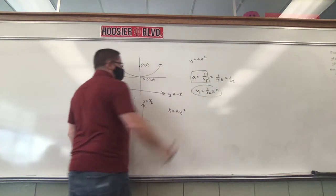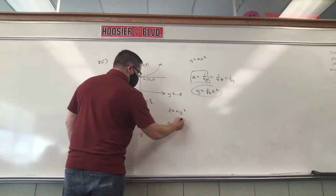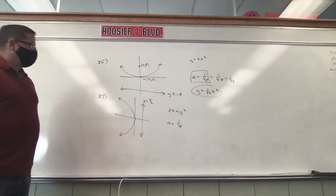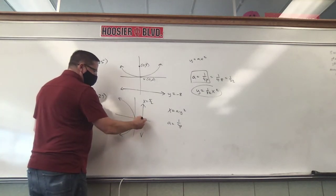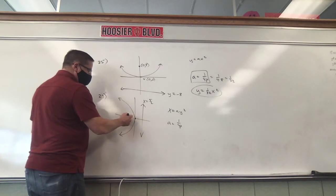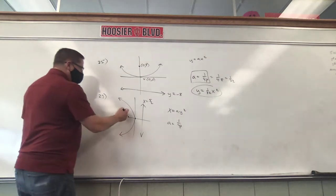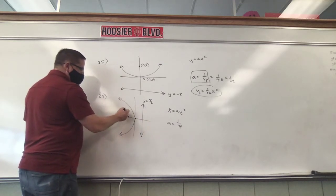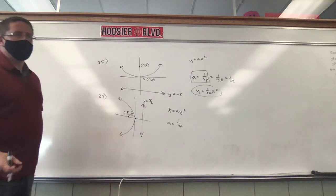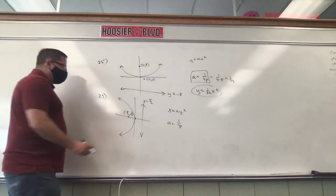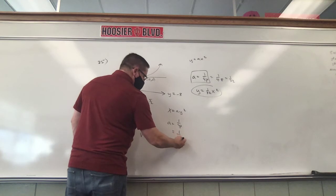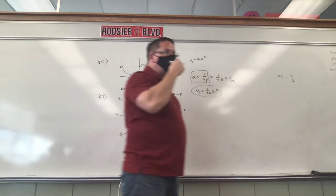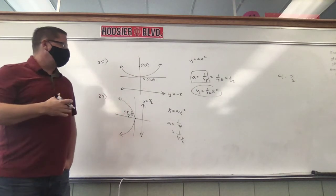We're going to use that formula on virtually every single problem: a equals 1 over 4p. I don't know what a is other than it's negative something. But I do know what p is — p is the distance from the vertex to the directrix, or the distance from the vertex to the focus. The focus would be the point negative 5 halves, 0. So either way, the distance is 5 halves. So it's 1 over 4 times 5 halves.